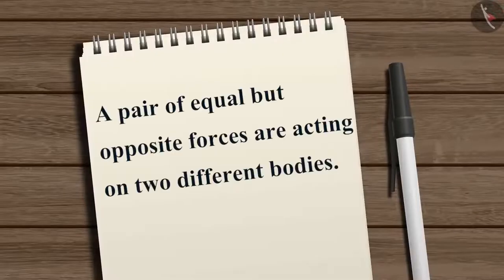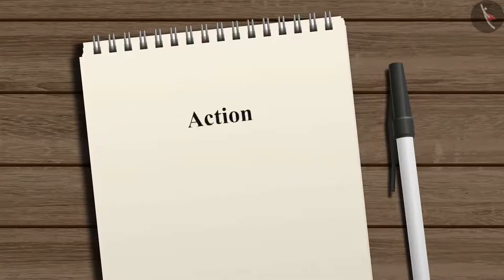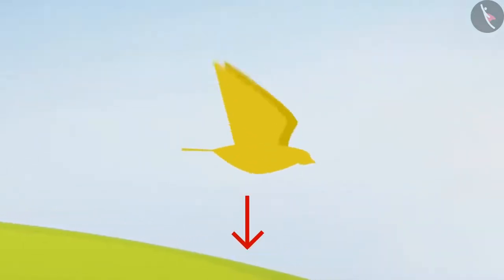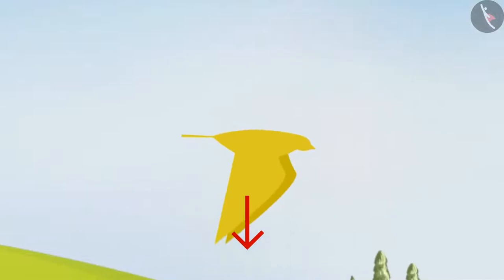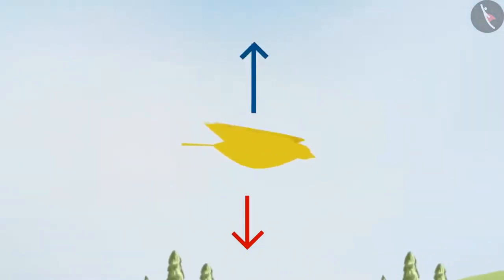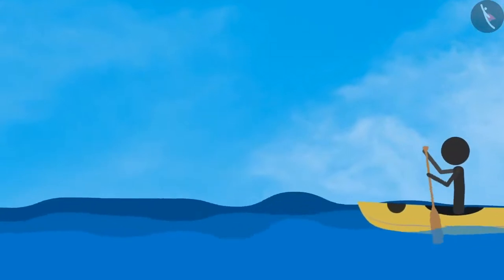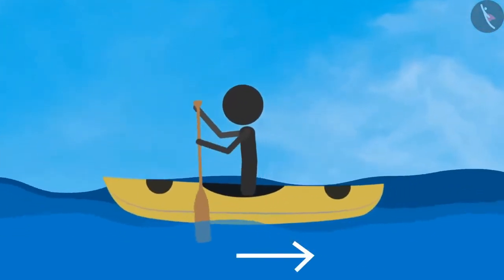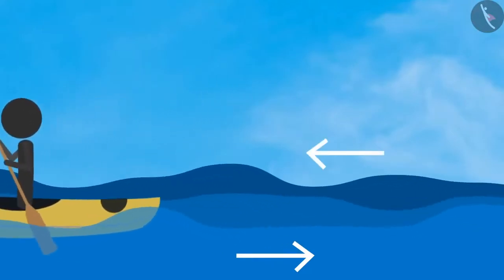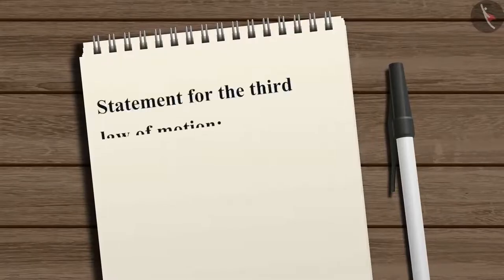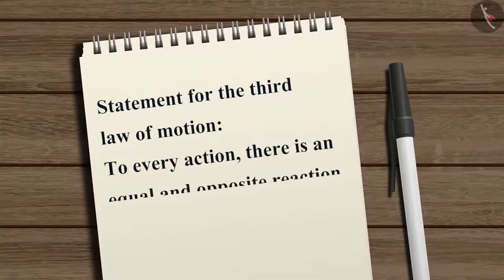In these examples, a pair of equal but opposite forces act on two different bodies. We can refer to one as the action and the other as the reaction. In the first example, the bird flapping its wings downwards is the action, and the reaction is the force that helps the bird fly. In the second example, pulling the oar backwards is the action, and the boat moving forward is the reaction. This gives us the alternative statement: to every action there is an equal and opposite reaction.